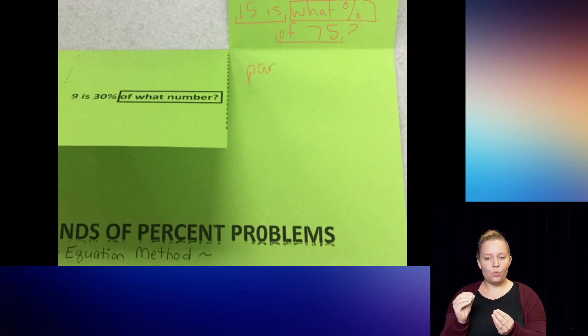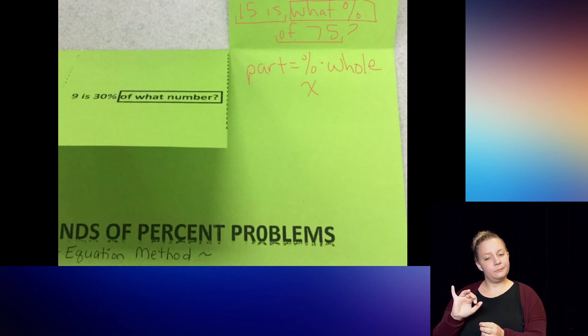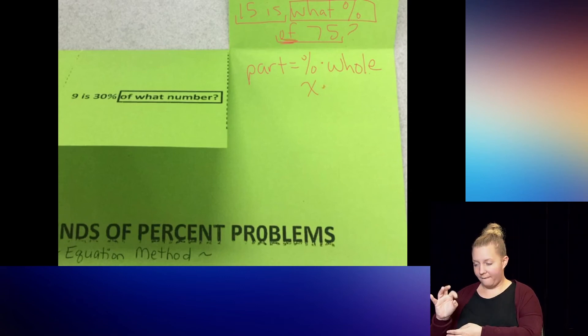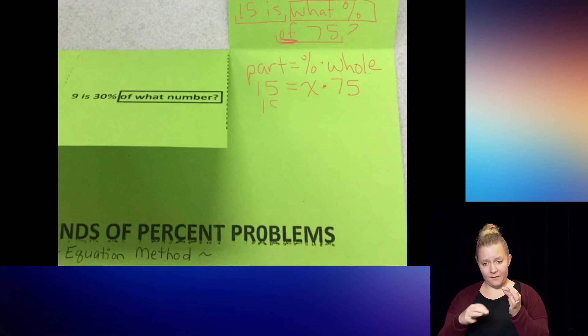So in my formula where it says part equals percent times whole, I usually like to start with my percent number, but I can't because I don't know what it is. So in this case, my variable has to go in place of the percent. The whole amount is what it's taken out of. So that's the 75. And then my part on the left side of the equal sign is what the is says, and that is 15.